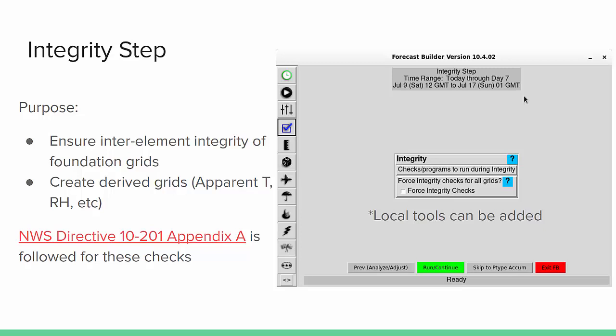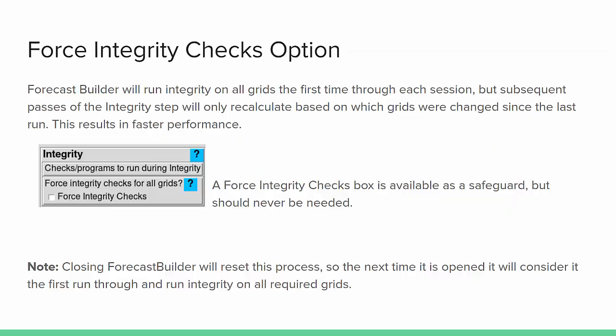Local tools can be added, but for the most part you should just have the Force Integrity Step Checks option in this step. The Force Integrity Checks option will generally not be needed and is there as a safeguard. As a little background, Forecast Builder will run integrity on all grids the first time through each session.